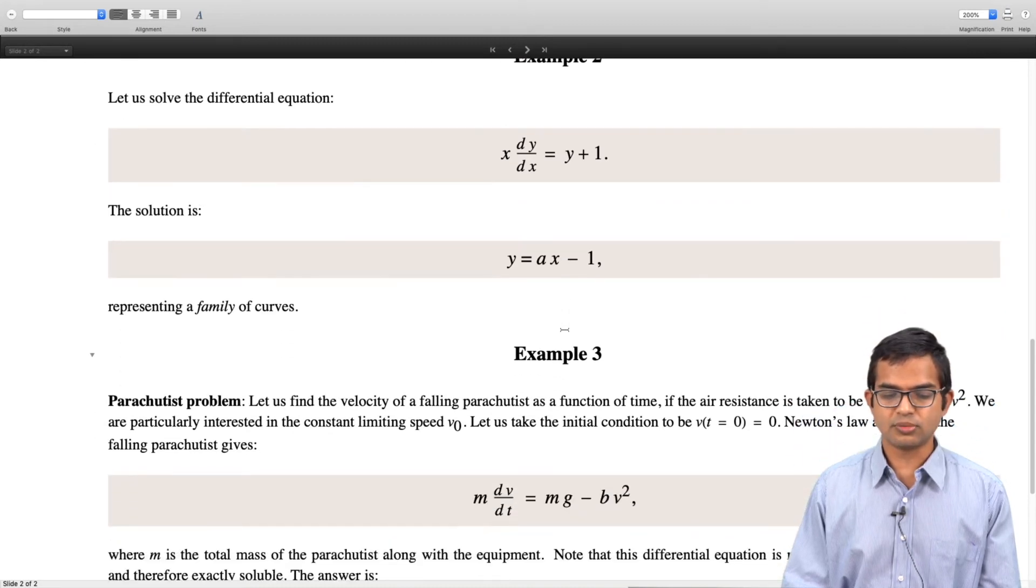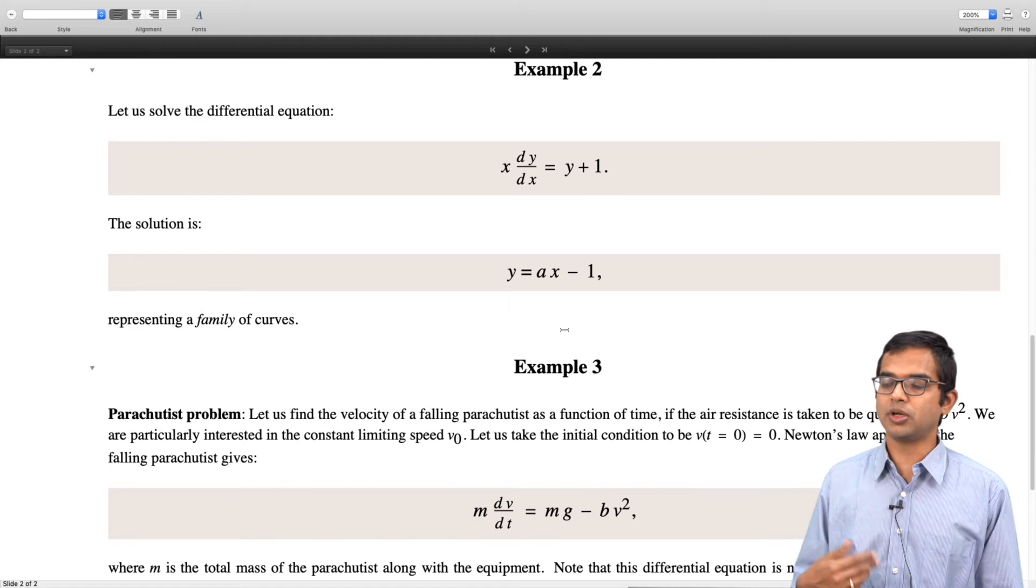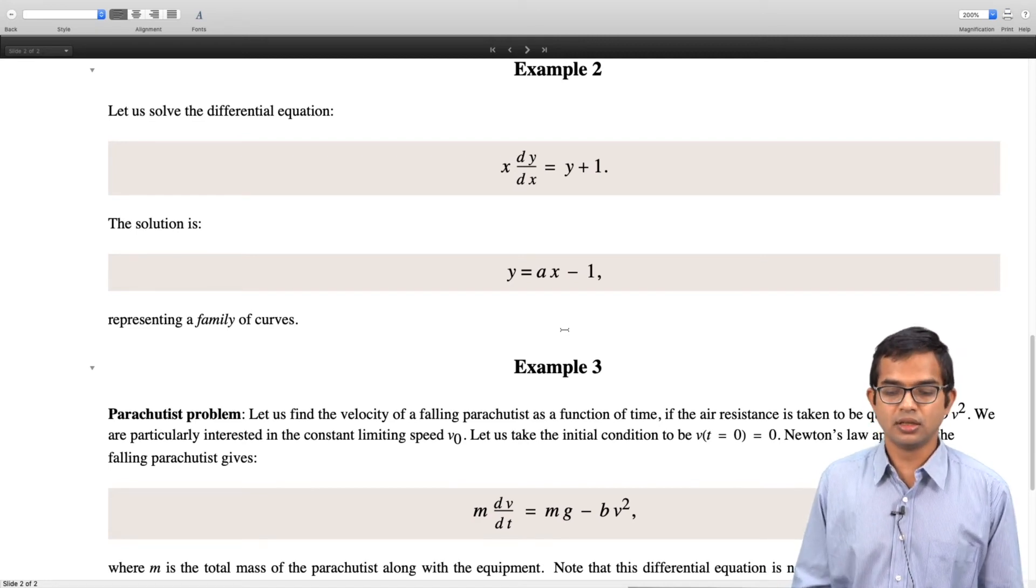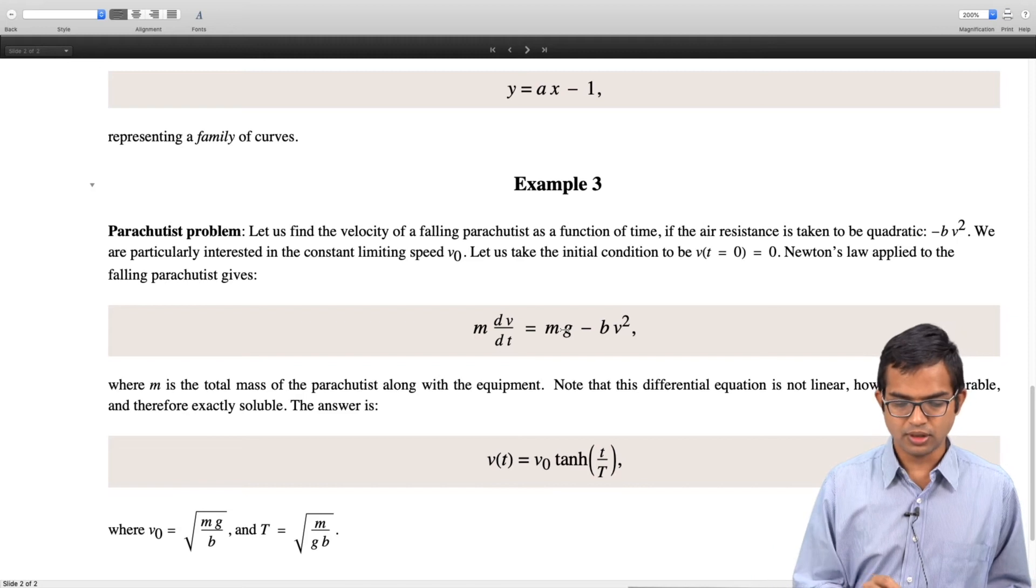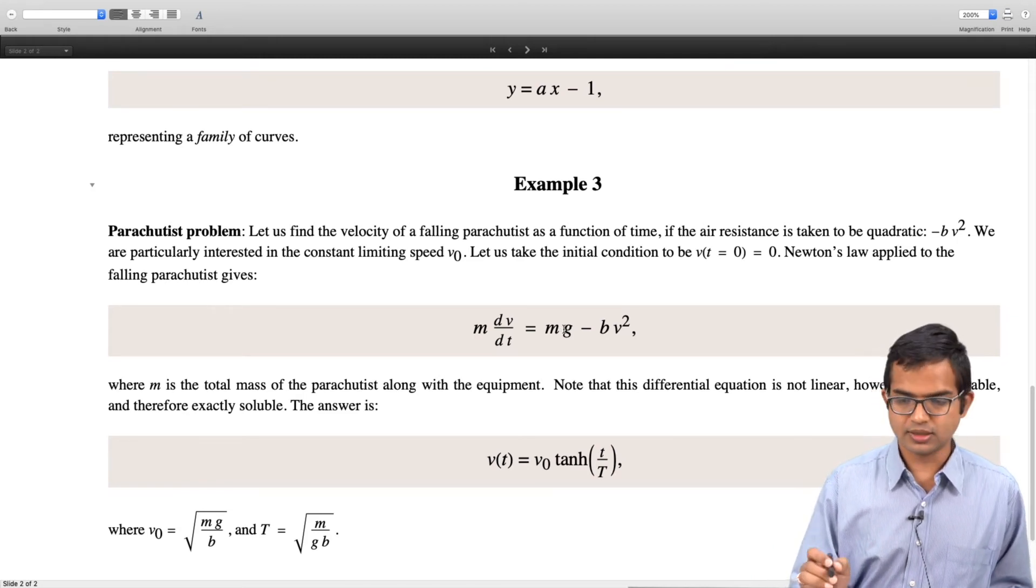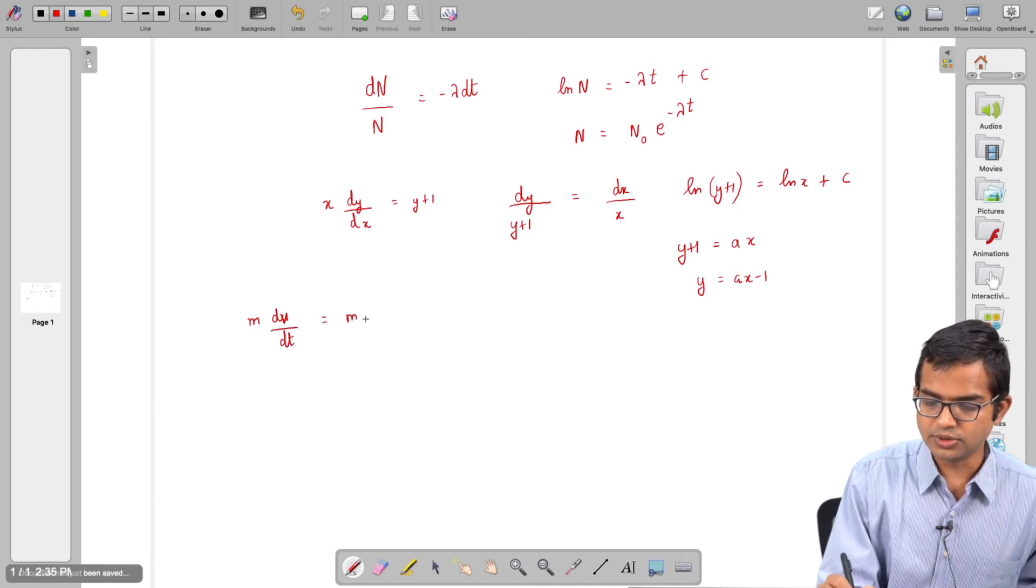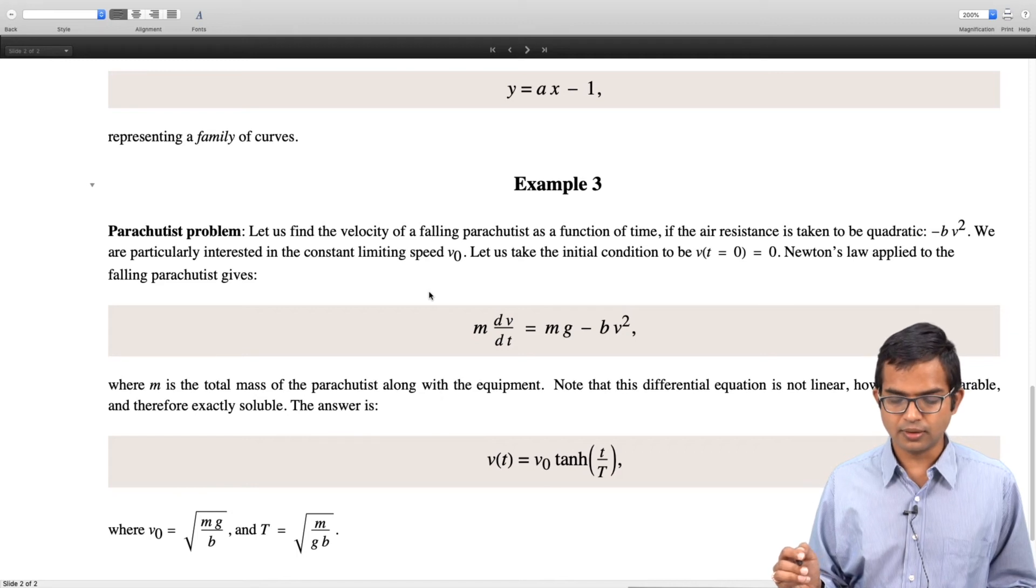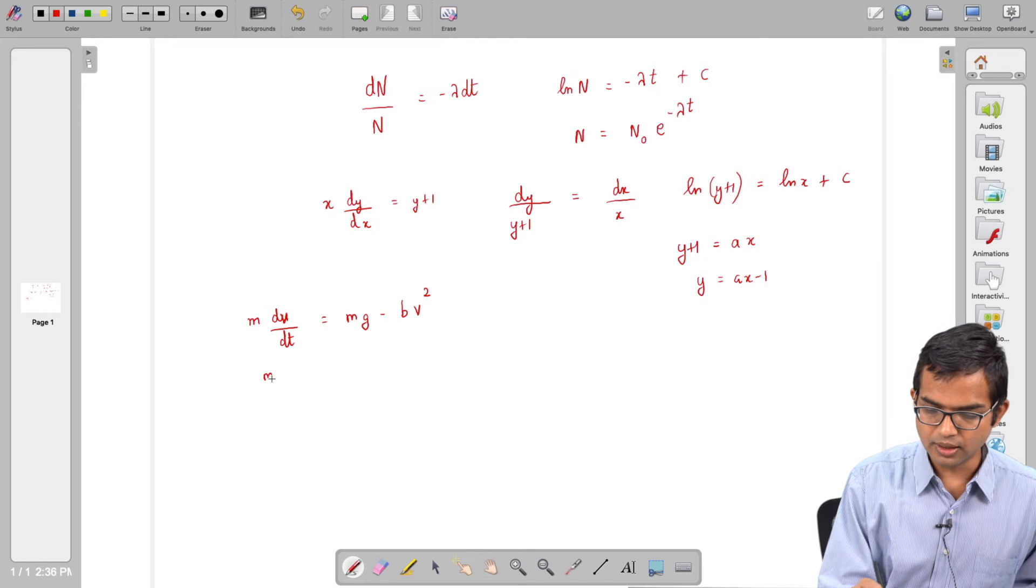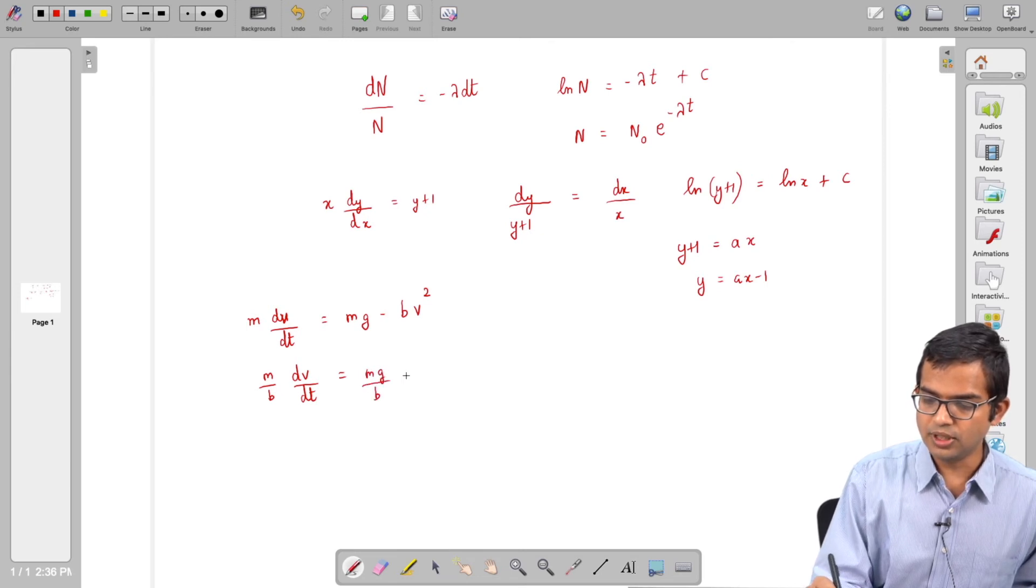Let us look at one more example: the parachutist problem. You have the velocity of a falling parachutist as a function of time, where the air resistance is taken to be quadratic: -bv². We are interested in the limiting speed of this parachutist. So you have m(dv/dt) = mg - bv².